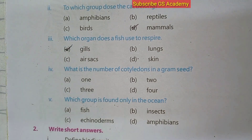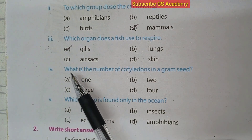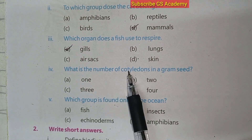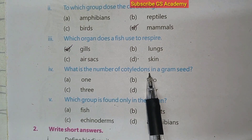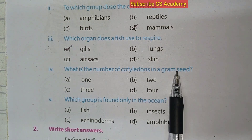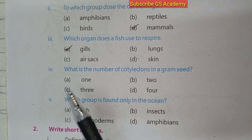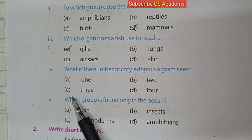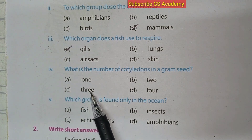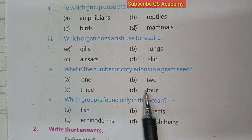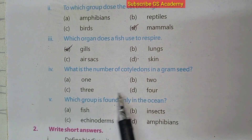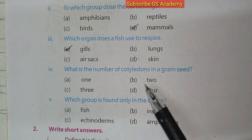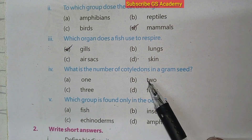What is the number of cotyledons in a gram seed? Options are: A. 1, B. 2, C. 3, D. 4. The correct answer is B, 2.